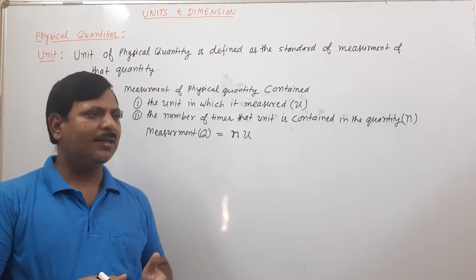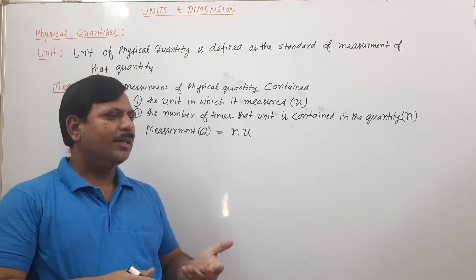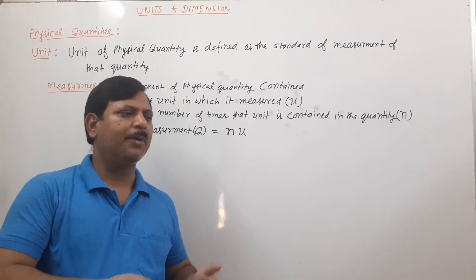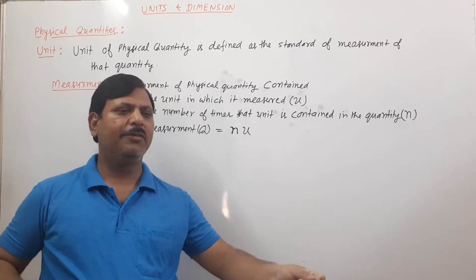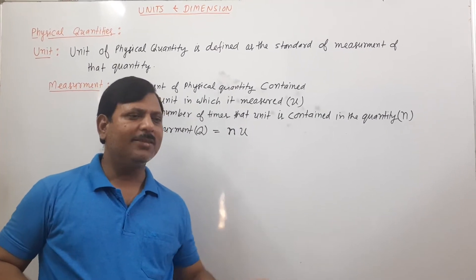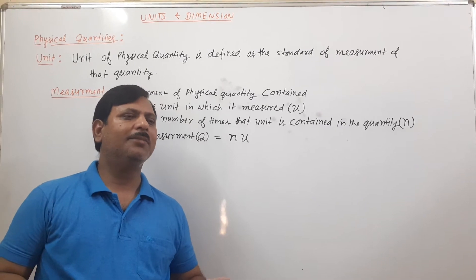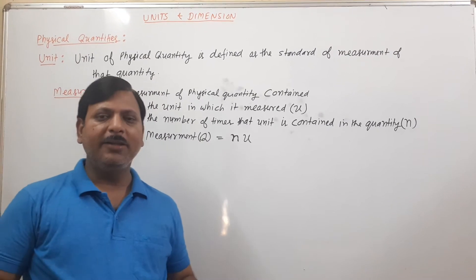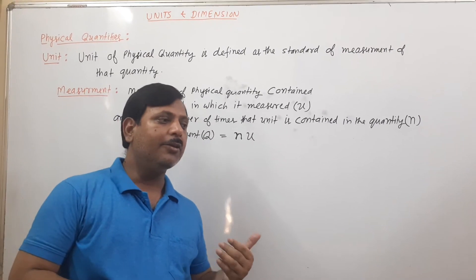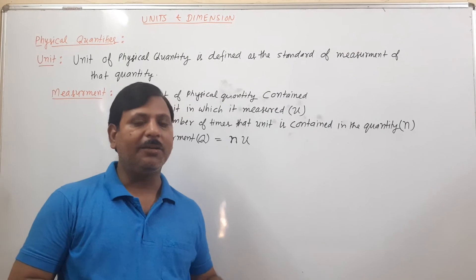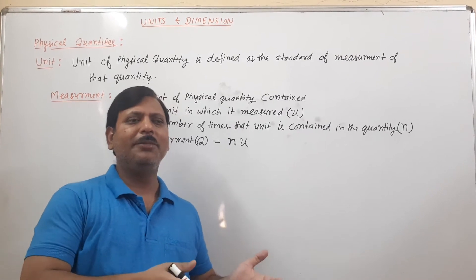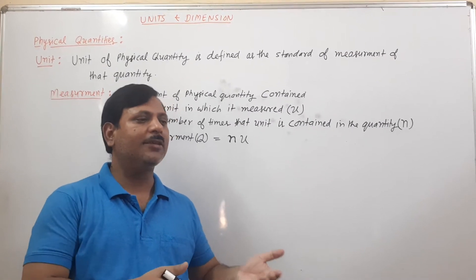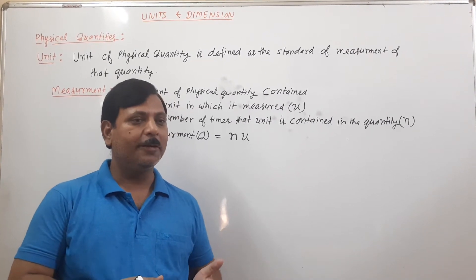That standard is called a unit. For example, if you want to measure length, we use the standard of meter. Sometimes we use centimeter. So meter, centimeter, and kilometer — these are the units of length.